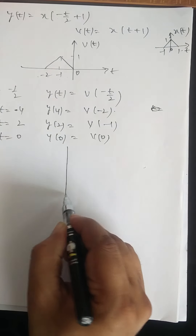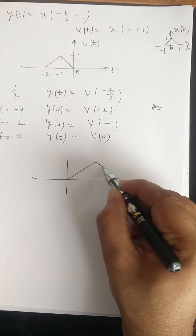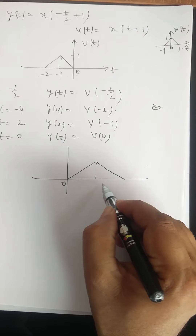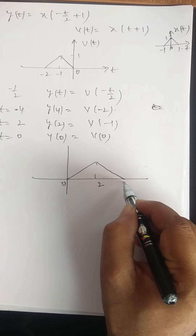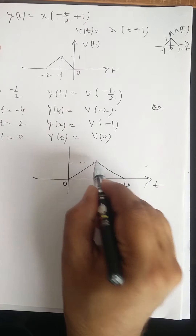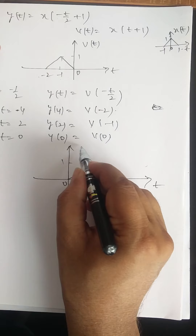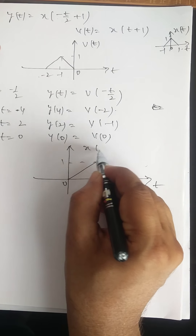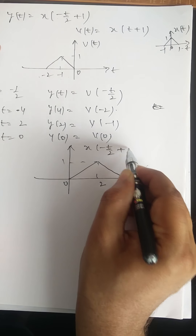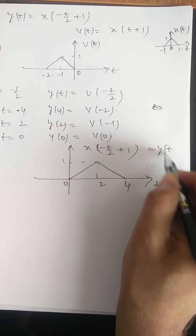The result exists from 0 to 4, with axis values at 0, 2, and 4. The peak value is 1. This is x of minus t by 2 plus 1, which is y of t.